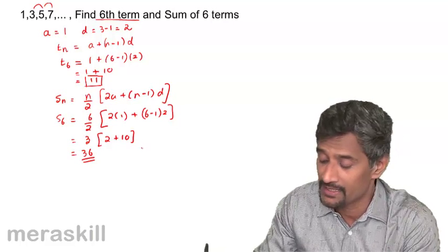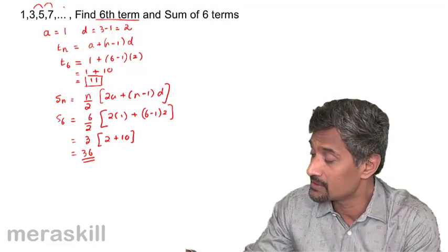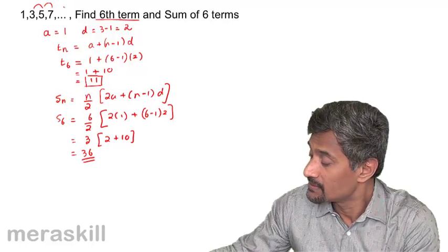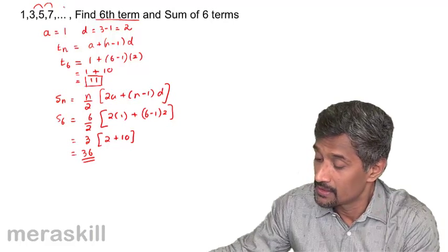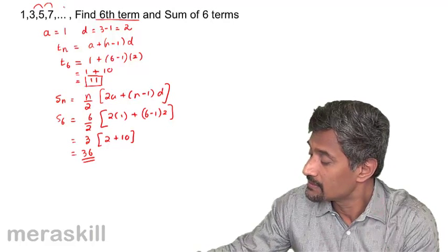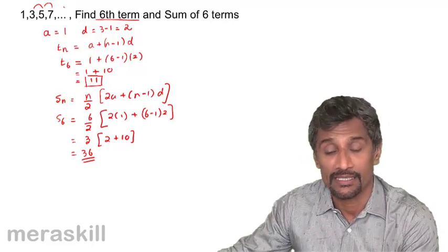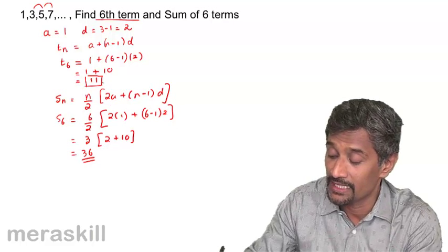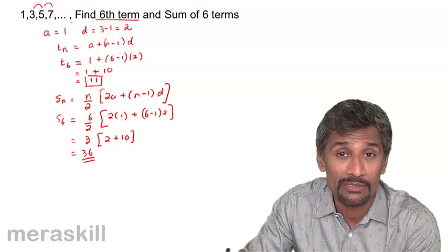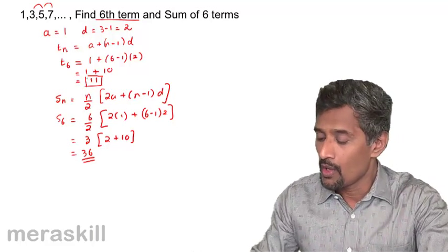We can check: 1 + 3 + 5 + 7 + 9 + 11 = 36. So the sum of the first six terms is 36 and the sixth term is 11. This actual verification may not always be possible when n is large, but it shows how valid the formula is.